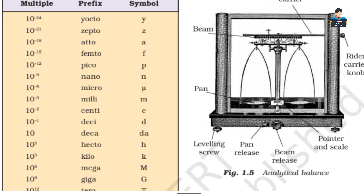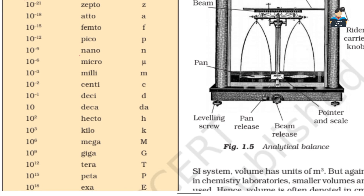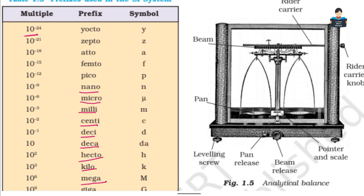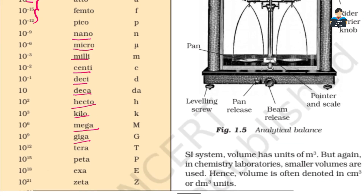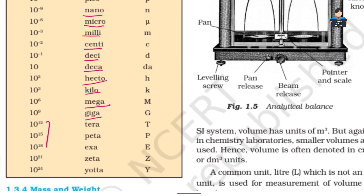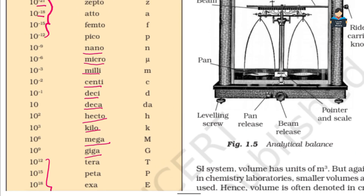Prefixes are used in the SI system. 10 to the power of minus 24 and other powers are used. Common prefixes we are familiar with include nano, micro, milli, deci, deca, hecto, kilo, mega, and giga. Beyond these, there are also prefixes for powers such as minus 12, minus 18, and minus 24. We are familiar with nano, micro, and milli from our studies.